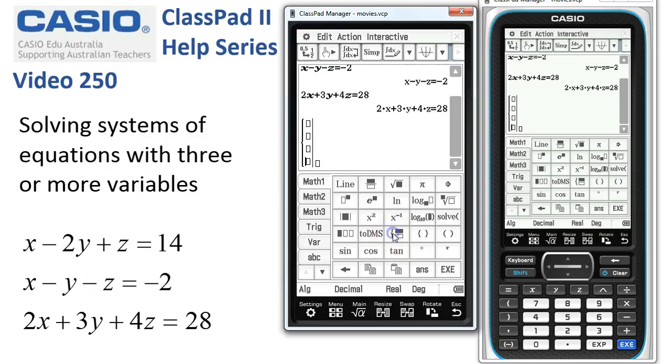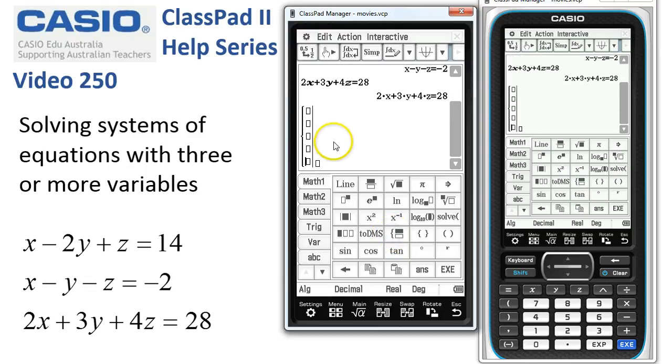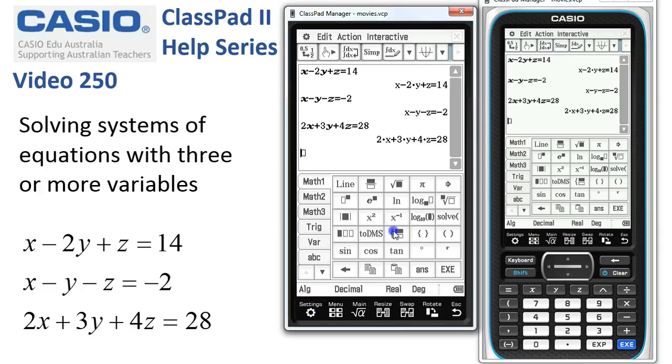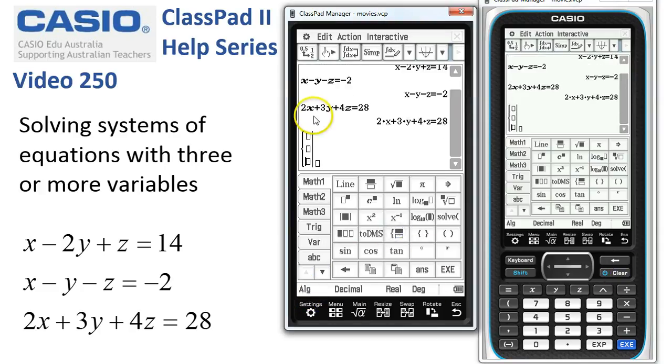And if we had more we'd just keep on tapping it. Four equations, four unknowns and so on. So I'll just clear that out the way and we'll just tap it once, twice for our three equations.